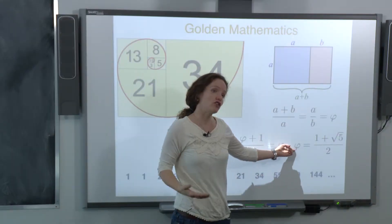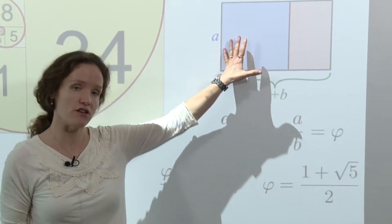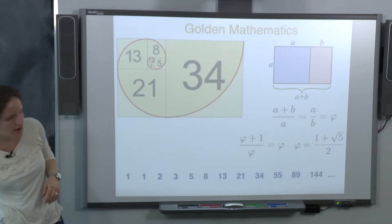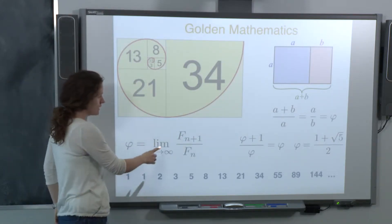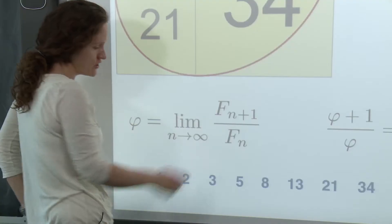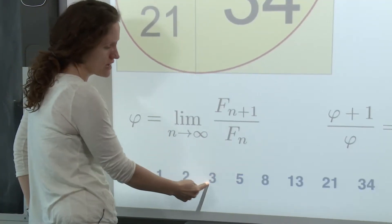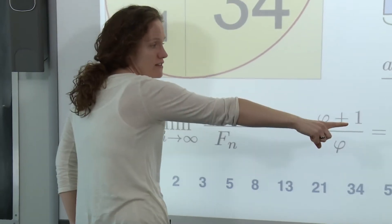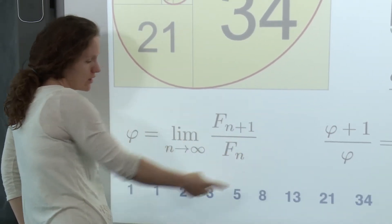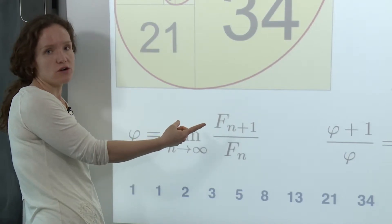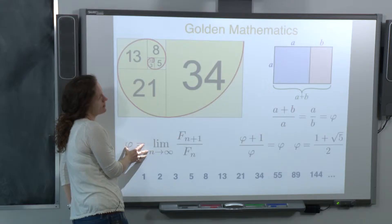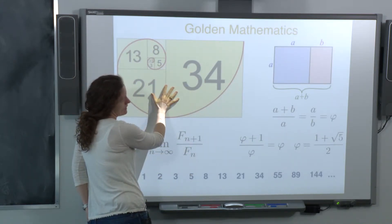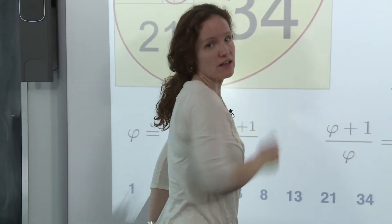Solving for phi gives a quadratic equation, which I solve with the quadratic formula, finding two roots — one positive and one negative. We're interested in the positive root because we want it as a side length. This number phi is called the golden ratio, and the rectangle with this property is called the golden rectangle. If you look at the ratio of successive Fibonacci numbers — 3/2, then 5/3, then 8/5, then 13/8 — and take the limit, that ratio equals the golden ratio.